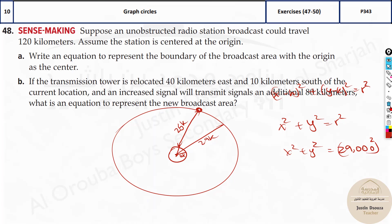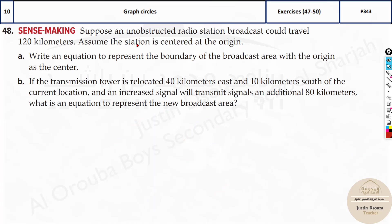Now, another similar problem. Suppose an unobstructed radio station broadcast could travel 120 kilometers. Assume the station is centered at the origin. Write the equation to represent the boundary of the broadcast area with the origin as the center. When it comes to circles, it's just x² + y² = r². Here, what is r²? 120 squared. That's the answer.